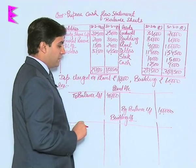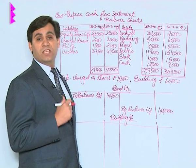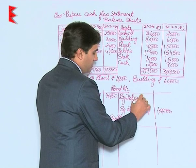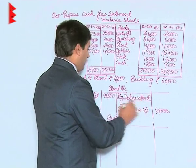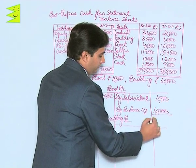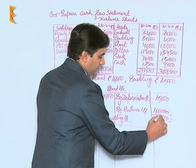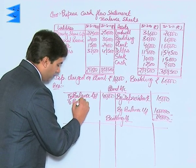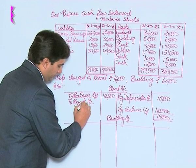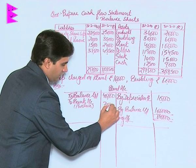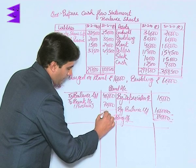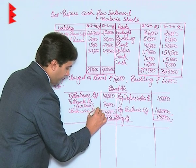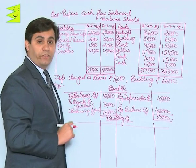The depreciation charge on plant is 10,000. Whenever we charge depreciation, the entry would be depreciation to plant, so it appears on the credit side: by depreciation 10,000. The total comes to one lakh ten thousand. Out of this one lakh ten thousand, we deduct 40,000 and we get the bank account purchase — which is 70,000. Remember this purchase is the balancing figure, and it represents an outflow on account of purchase.